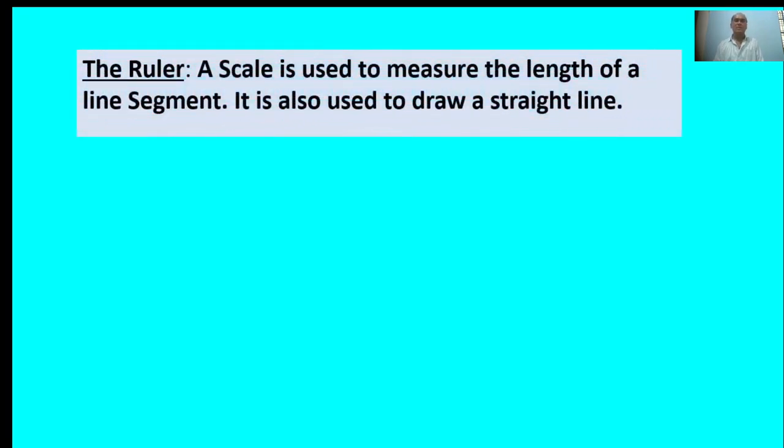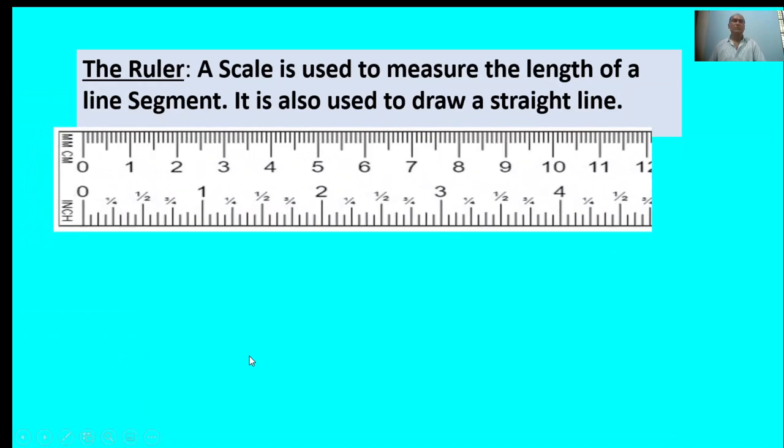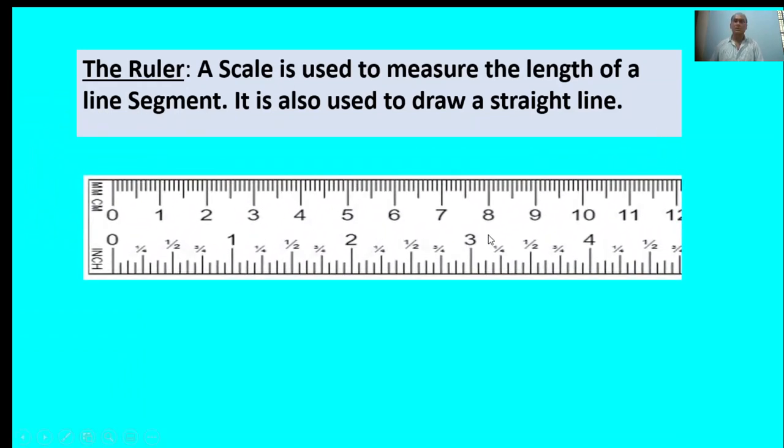First, the ruler. A scale is used to measure the length of a line segment. It is also used to draw a straight line. This is called a ruler.